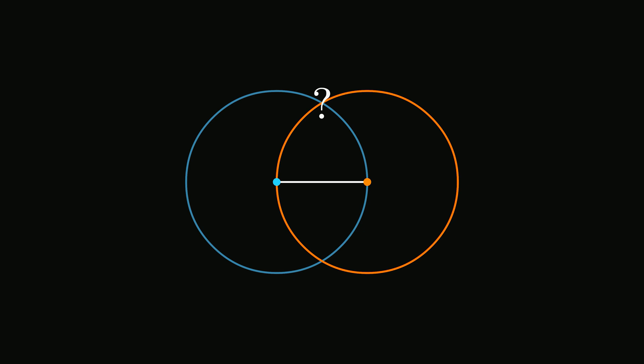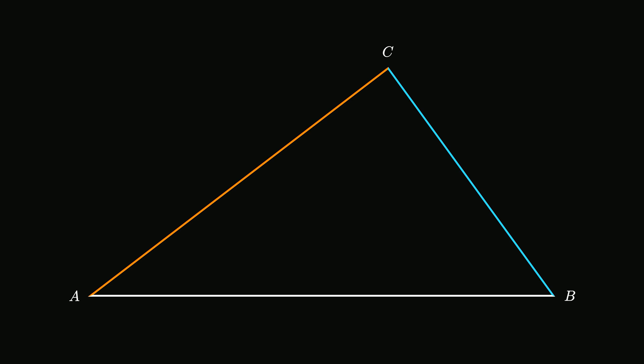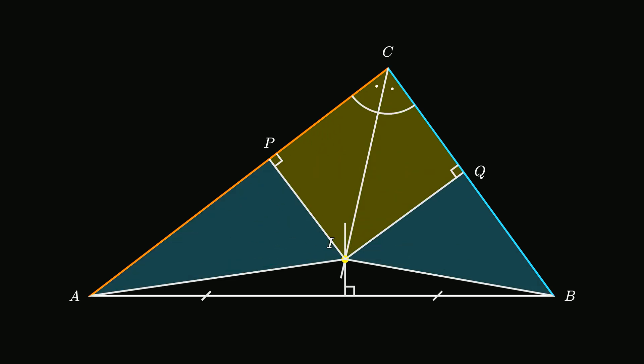Let's discuss another proof to understand how much chaos a diagrammatic assumption can create. Consider triangle ABC and draw one of the angular bisectors and the perpendicular bisector across. Let them meet at a point I. Drawing the perpendiculars onto the two sides of triangle ABC forms two pairs of right triangles.